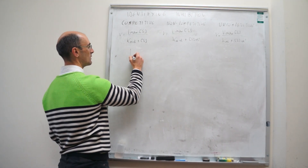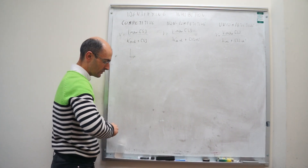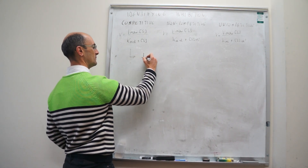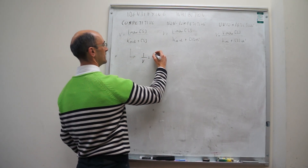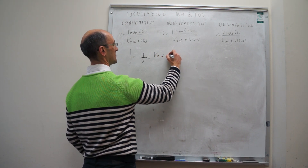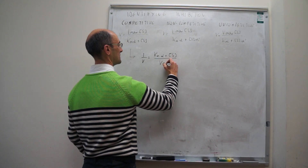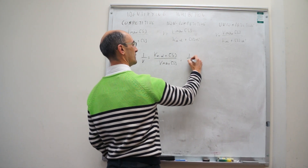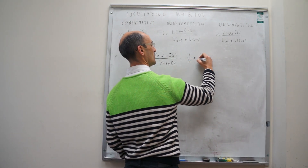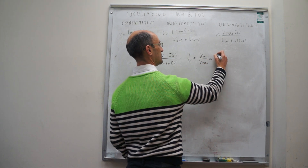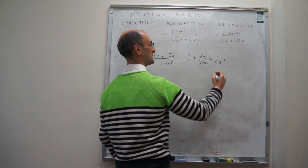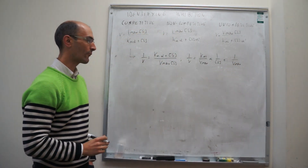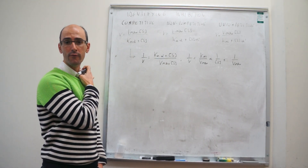Let's start with competitive inhibition. To obtain the Lineweaver-Burk plot, you take the double reciprocal of the expression. The reciprocal gives 1/V equal to K_M alpha plus concentration of S over Vmax times S, which separates to: 1/V = (K_M / Vmax) × alpha × (1/S) + 1/Vmax. That is the Lineweaver-Burk equation for competitive inhibition.